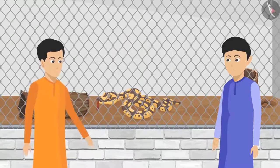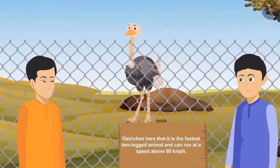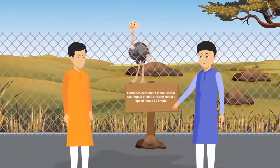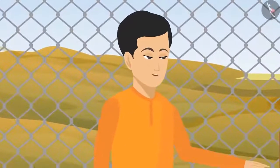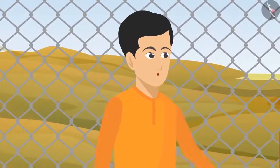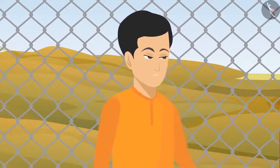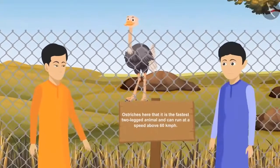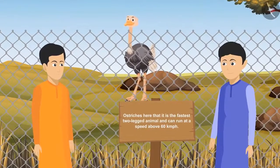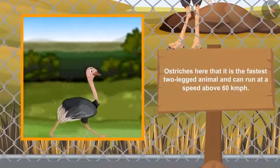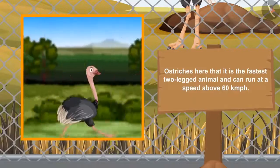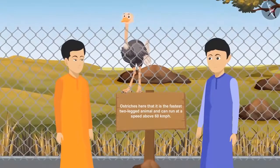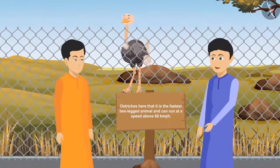They then spotted an ostrich. Zeeshan noted he had only seen it in books before. They recalled that ostriches cannot fly, and that an ostrich kick is powerful enough to kill a person if it hits the head. A sign at the enclosure confirmed that the ostrich is the fastest two-legged animal, capable of running at speeds above 60 kilometers per hour.